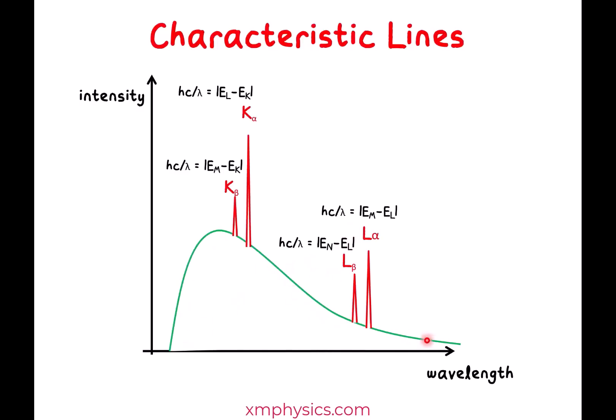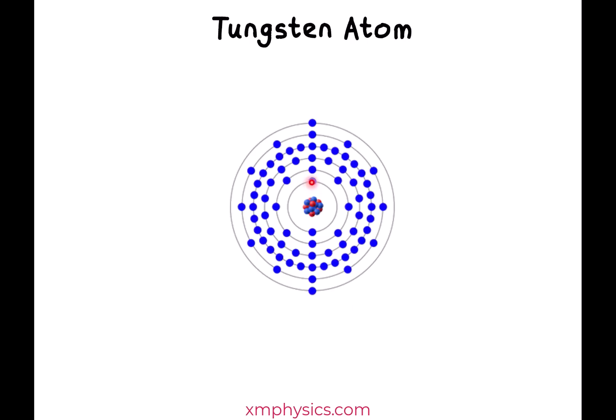So now let's talk about the Bremsstrahlung radiation. The characteristic lines are produced by the tube electrons interacting with the K-shell electrons. Now the Bremsstrahlung radiation is produced when the tube electrons interact with the nucleus itself.